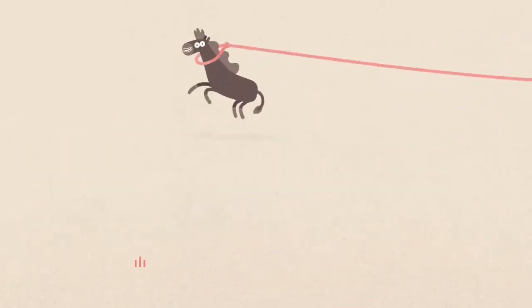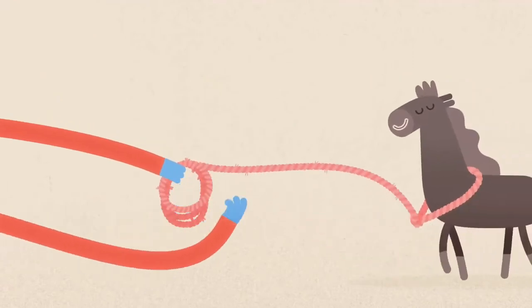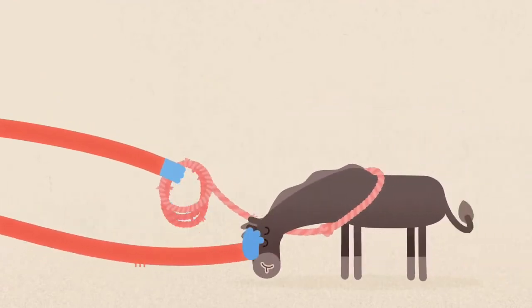The horse runs around, feeling like it's got all the space in the world. But very slowly, the rope's brought in, and the horse adjusts to this feeling, until it comes to a natural place of rest.